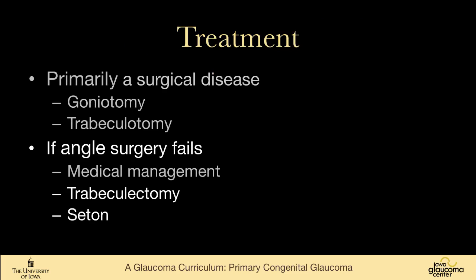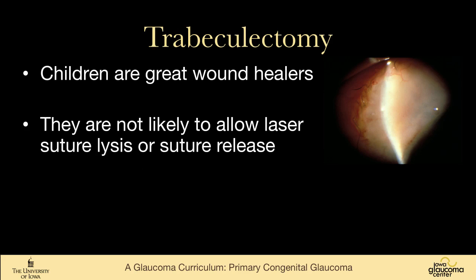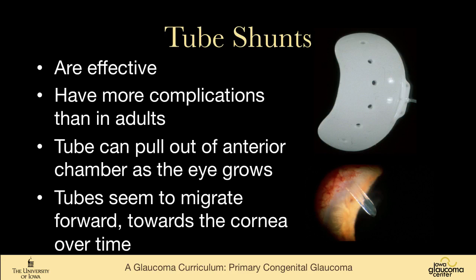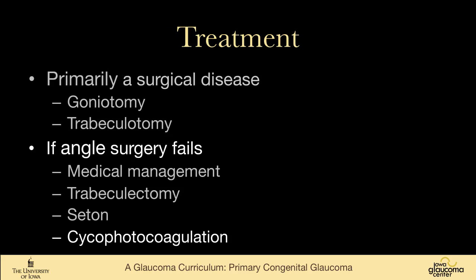The surgeries we do in adults don't work very well in children. Children are great wound healers, and that is not a great thing for trabeculectomy. They also are not likely to let us do laser suture lysis or suture release. Tube shunts like Baerveldts and Ahmeds are effective but have more complications in children than in adults — the tube can pull out of the anterior chamber as the eye grows and seems to migrate forward towards the cornea over time. Cyclophotocoagulation can be used but is certainly a last-ditch effort; children are good at reconstituting their ciliary body function, so it may need to be repeated multiple times with the threat of hypotony.